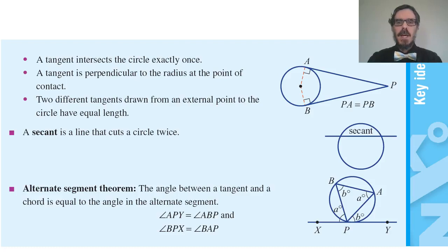So a tangent intersects the circle exactly once. The tangent, where it intersects, is perpendicular to the radius. At the point of contact the tangent is perpendicular. Now that's not called a theorem but it could be. Can you prove that?